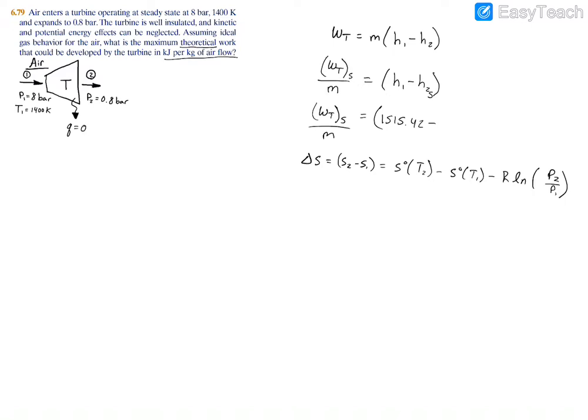So in simple terms, s naught is kind of like your specific entropy for an ideal gas, and then you just have your gas constant and then your pressure ratio. So obviously being an ideal process, you'd have the s2 minus s1, or the change of specific entropy, being equal to zero. So we can simplify this whole thing right over here to zero is equal to...